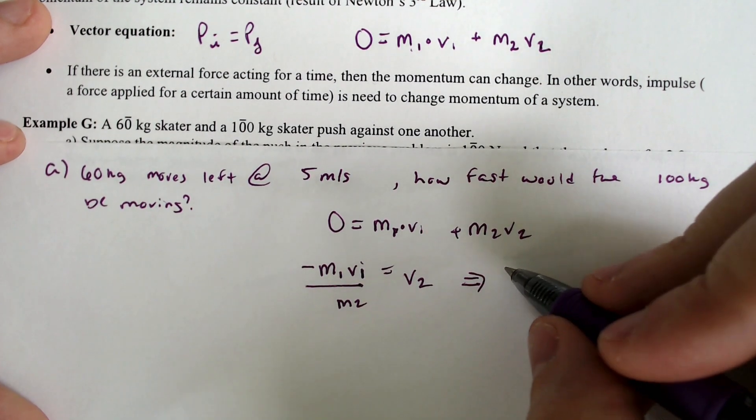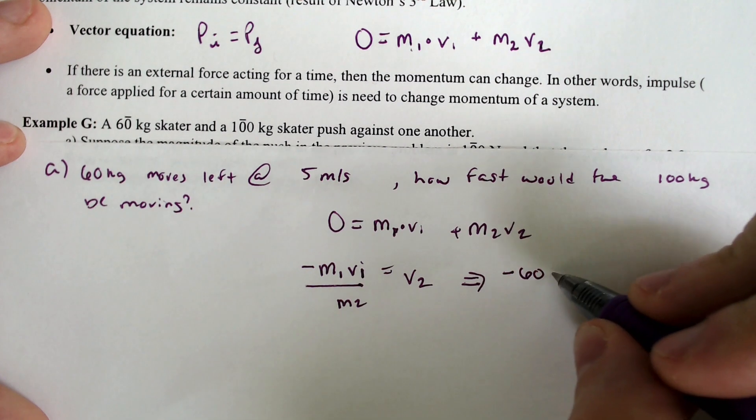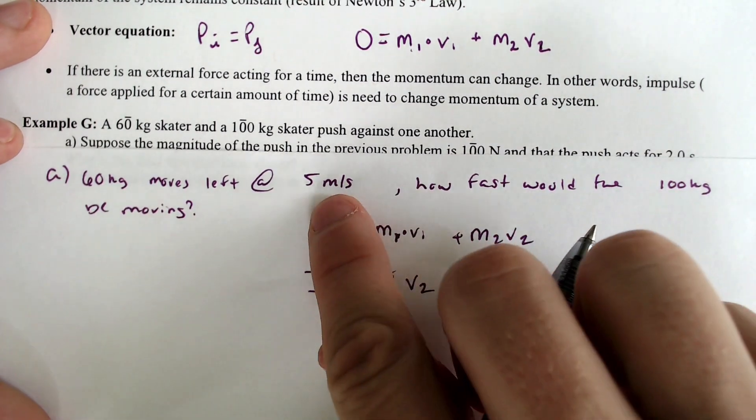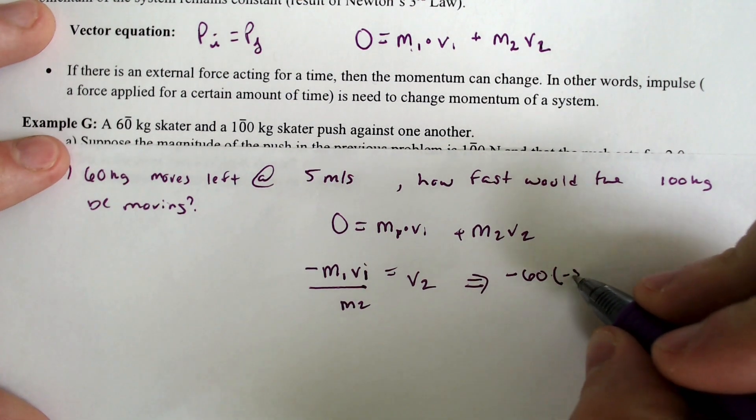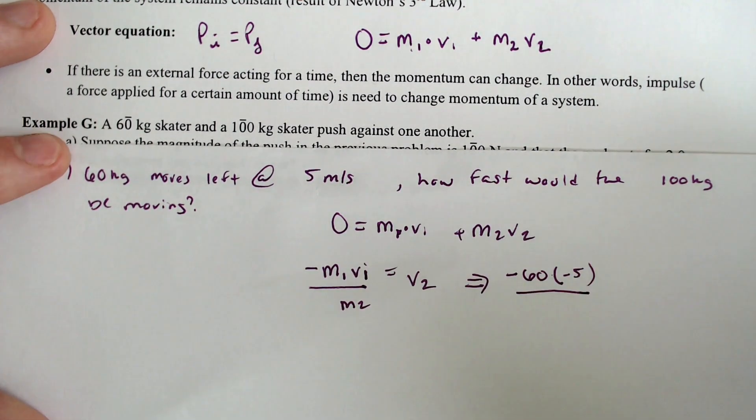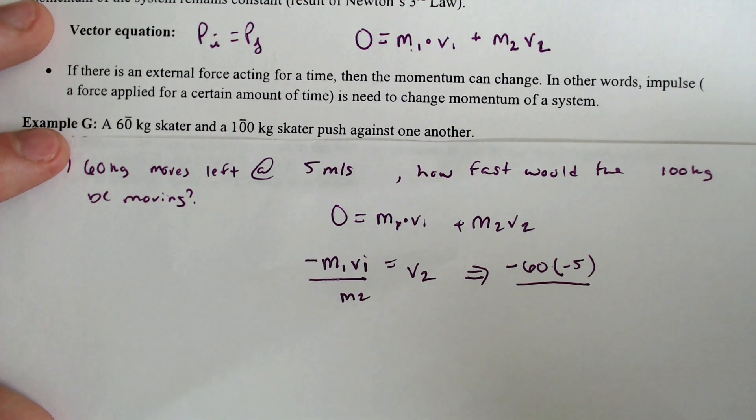That would mean that we would have, plugged in, we would have negative 60 times the velocity of skater one, which they are going to the left by five meters per second. It is a vector quantity, and sometimes when you see the vector quantities, you will actually care about the direction in these problems.